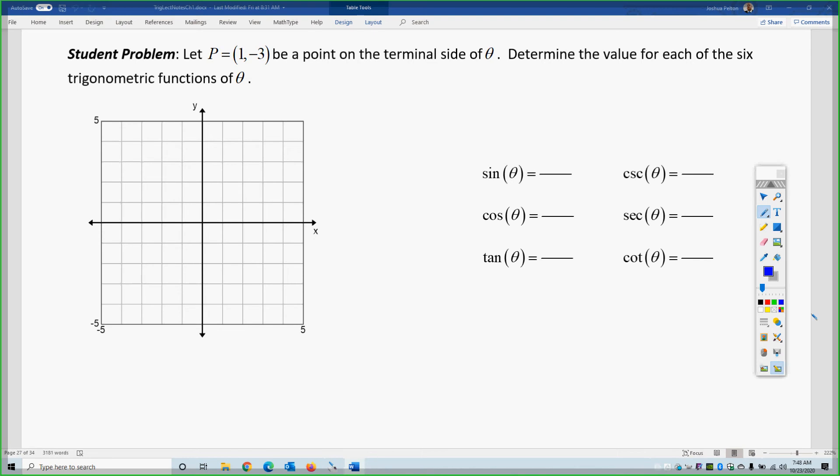For the student problem, we are the coordinate 1, negative 3. We cannot simply assume that this x is cosine and that y is sine in this case, because clearly, the radius is not 1. So, we have a 1 and a negative 3, so our radius is here.